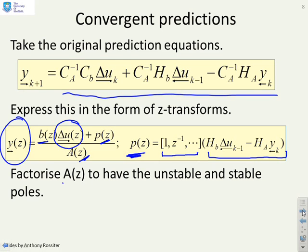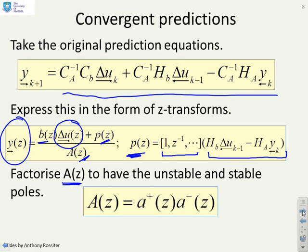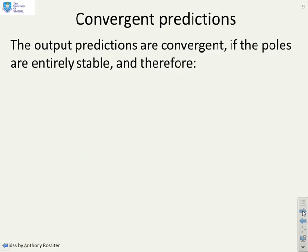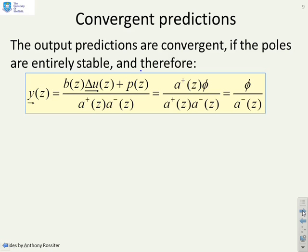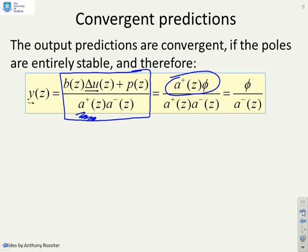Next, factorize A(z) into its unstable and stable poles: A(z) = A+(z) times A-(z), where A+ contains all the unstable poles and A- contains all the stable poles. The output predictions will be convergent if and only if the poles are entirely stable. So to make future predictions stable, the numerator must include a factor of A+, written as A+(z) times phi. Then A+ cancels, and the predictions become phi over A-(z) — which is convergent. That is the essence of what was proposed in the early literature.